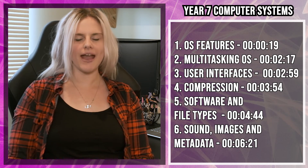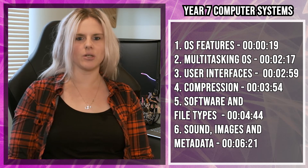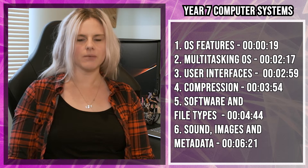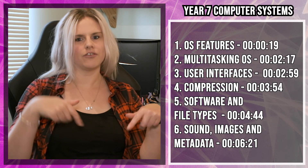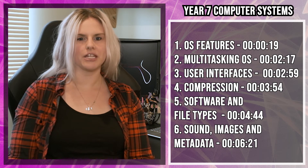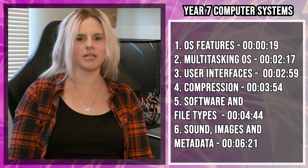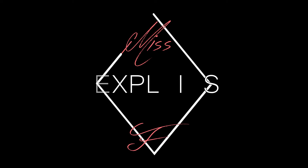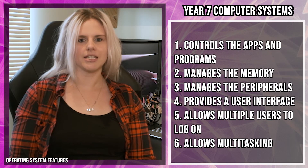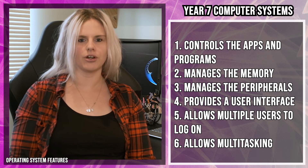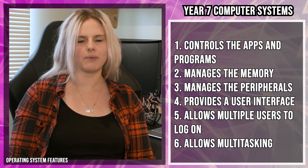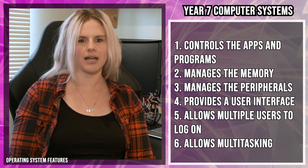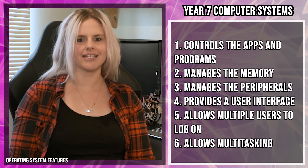This video will tell you everything you need to know about the Year 7 topic of computer systems. To make your life a little bit easier, I'm going to put different timestamps so you can skip to whatever bit you need. Operating systems are pieces of software that run on your computer. The operating systems you've probably heard of are Windows by Microsoft, iOS by Apple, and Android by Google. Operating systems perform six key tasks.